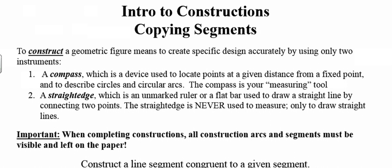You're going to need both instruments in order to do this video today. The compass is a device used to draw circles — you can locate points that are at a given distance from a given point. When we do constructions, the compass is always our tool used for measuring. This is different than how you're accustomed to thinking about measurement, because usually the ruler is our measuring device.